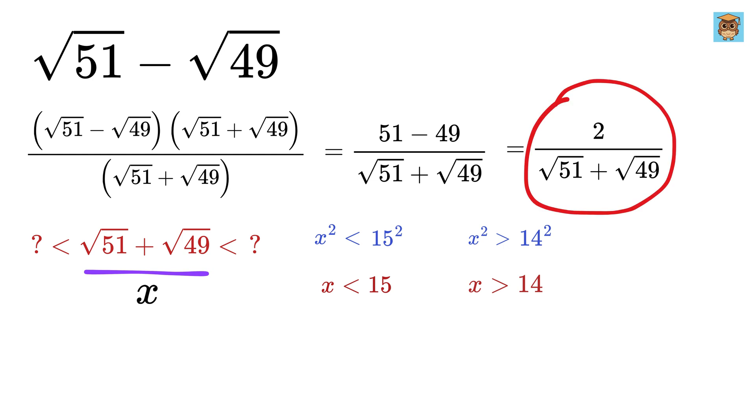Now our goal was to find an approximate value of this one, which is 2 divided by x. Since x is greater than 14 and less than 15, 2 divided by x will be greater than 2 divided by 15 and less than 2 divided by 14.